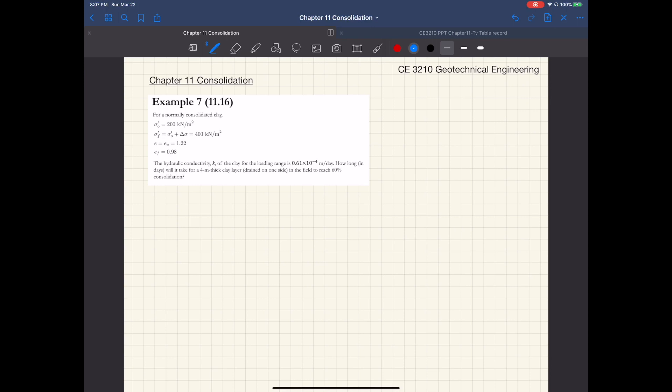Example 7 here asks you to estimate how long it will take for a 4-meter thick clay layer that is draining on one side to reach 60% consolidation. This problem is similar to examples 4 and 5.